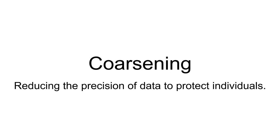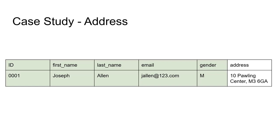Coarsening can be defined as reducing the precision of data to protect individuals. As in the earlier example, you might have an actual birthday or birth time in a data set, but really age might be enough for your research question. So say we have a research question: what gender are the individuals of Manchester? A postcode like M3 6GA doesn't even mean Manchester to some people — we really don't need this level of precision, we certainly don't need a street name or number to tell if they're in Manchester.